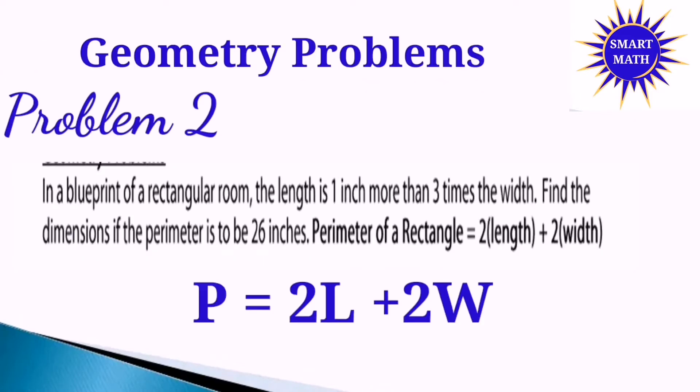Now let's have geometry problems. Problem number 2: In a blueprint of a rectangular room, the length is 1 inch more than 3 times the width. Find the dimensions if the perimeter is to be 26 inches. The perimeter of a rectangle is P = 2L + 2W.